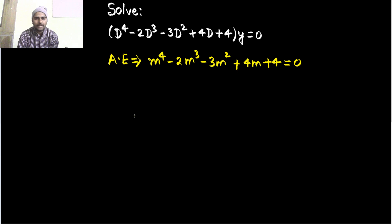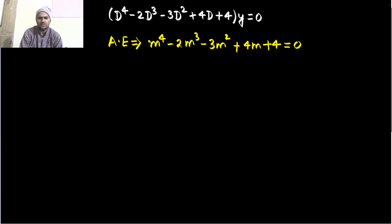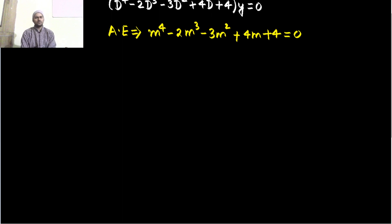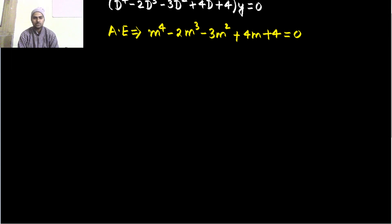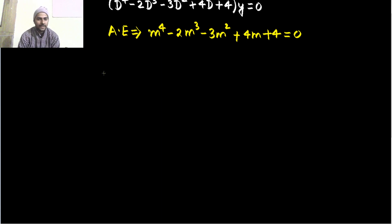Now let us move ahead. What we can do from here is we might factorize, but if it is not easy to factorize then let us go for some other method so that we can find the roots. One such method: the first root you have to always find by hit and trial — you do not have any other option. So let us find that; check for 1 — if I put 1, I am just doing hit and trial.